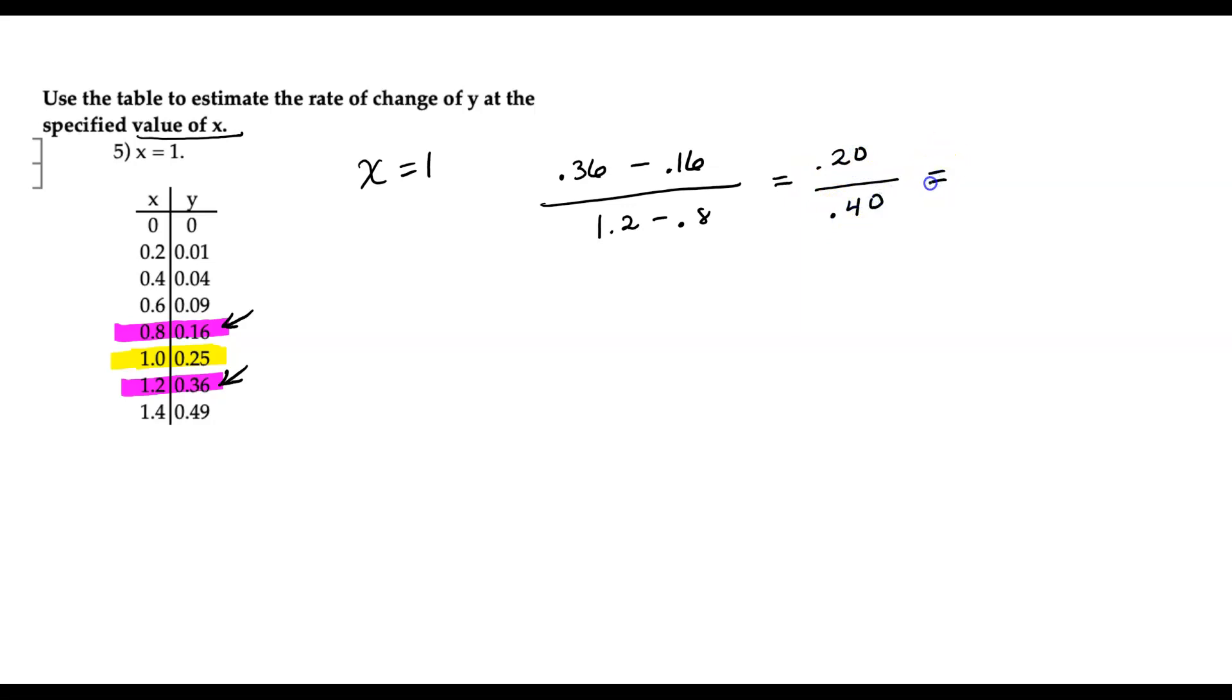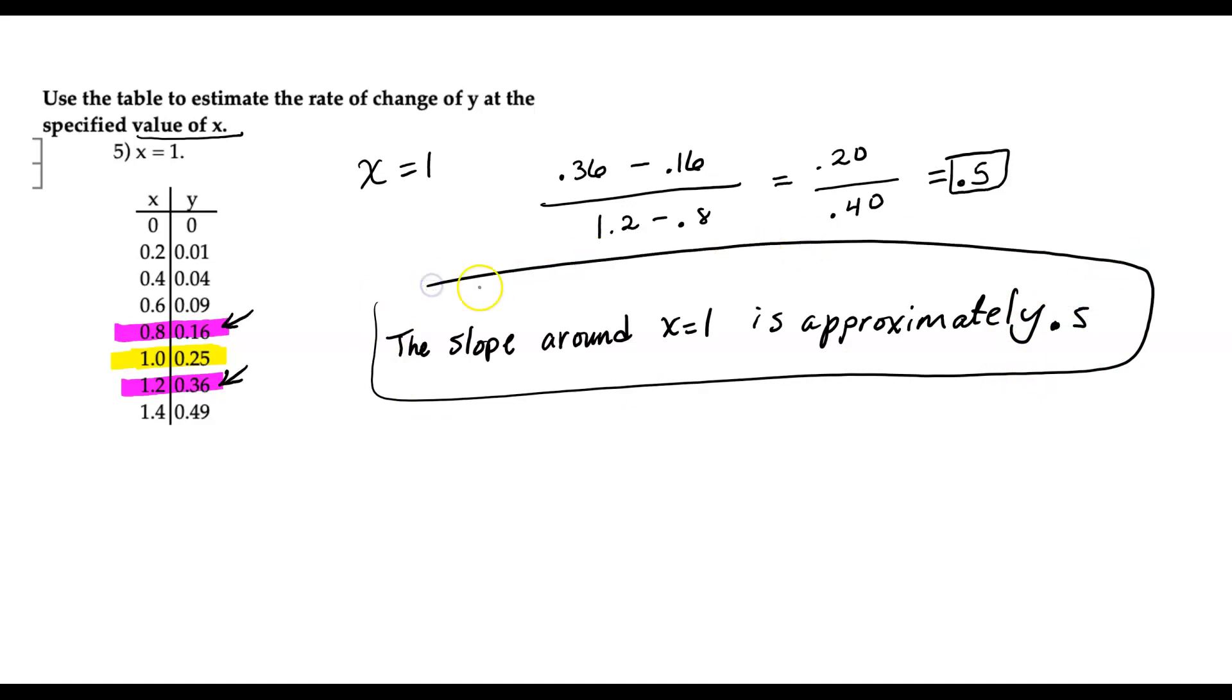You can use your calculator, but it really reduces to half. So 0.5 is my estimate for the slope. So if I'm estimating the rate of change, the slope around x equal 1 is approximately, and remember, these are approximations, is approximately 0.5.